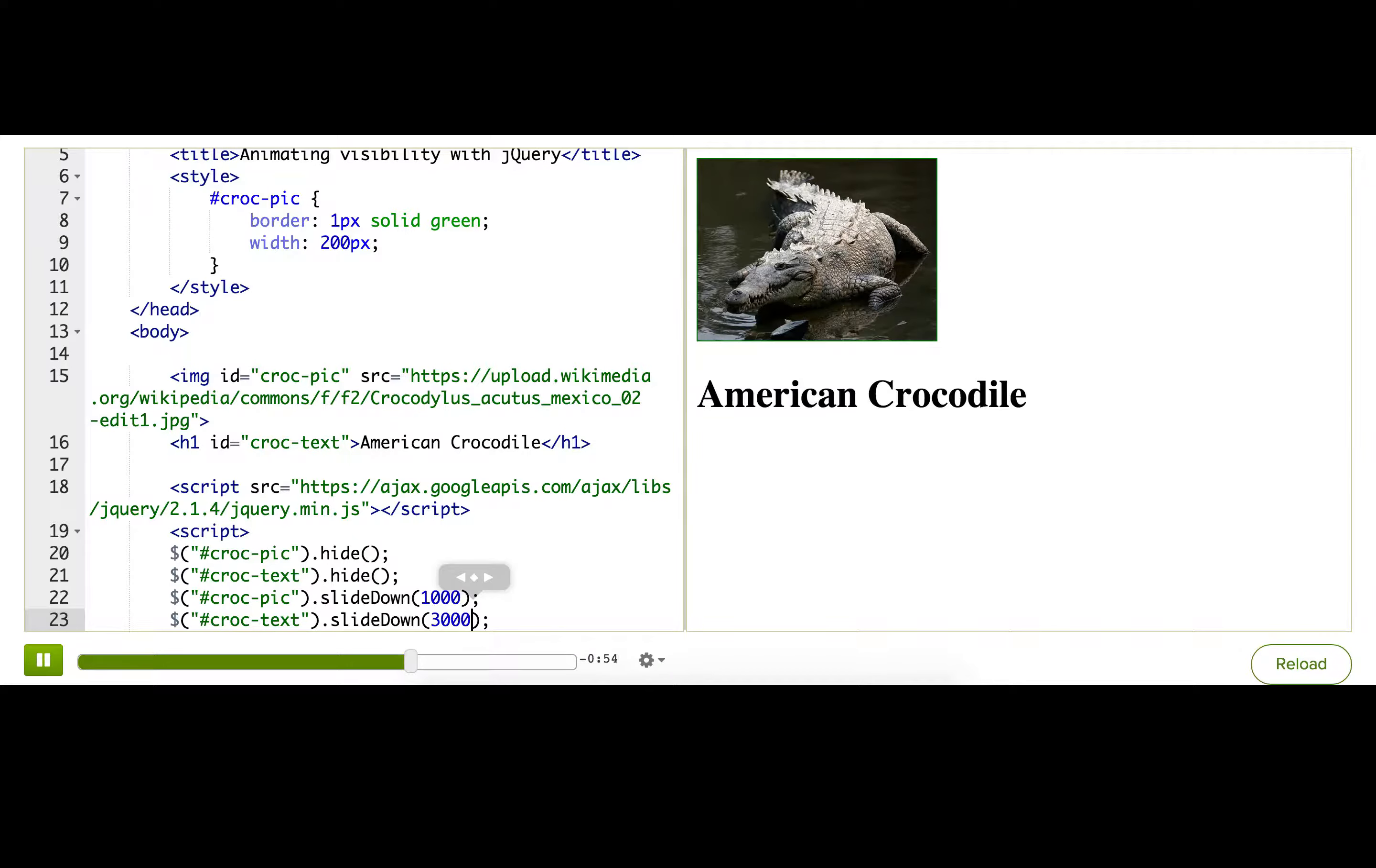What if we only wanted to fade in this text after we knew that the image was fully showing? Basically, instead of starting these animations at the same time, we want the text animation to start only after the image animation has ended.